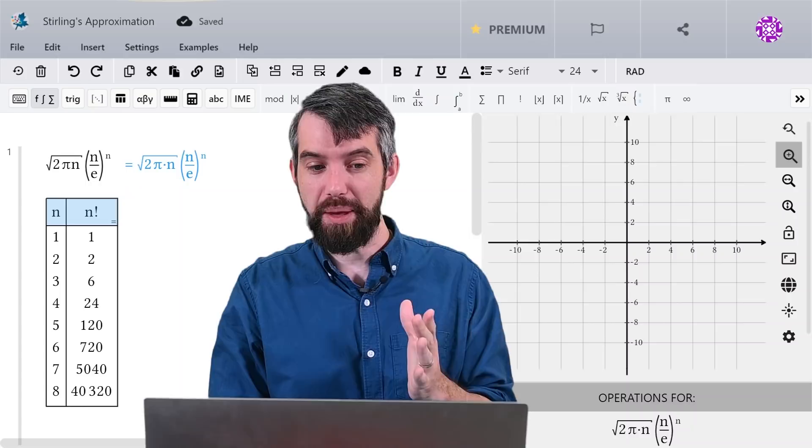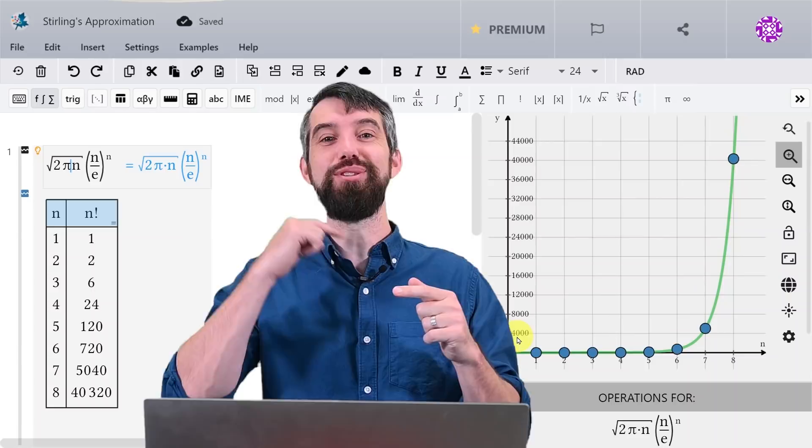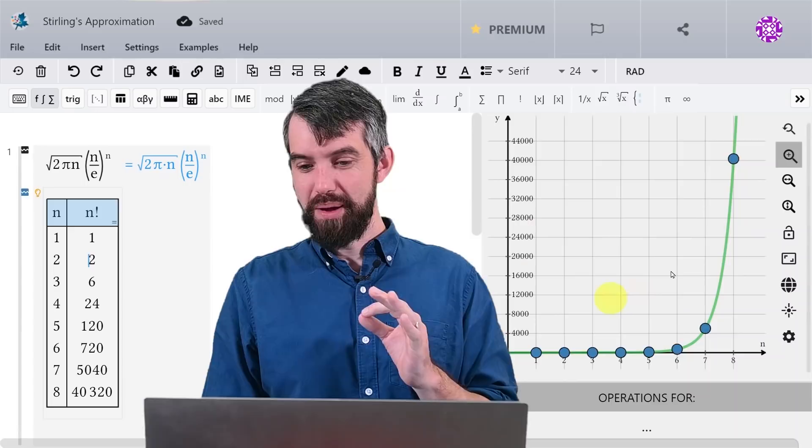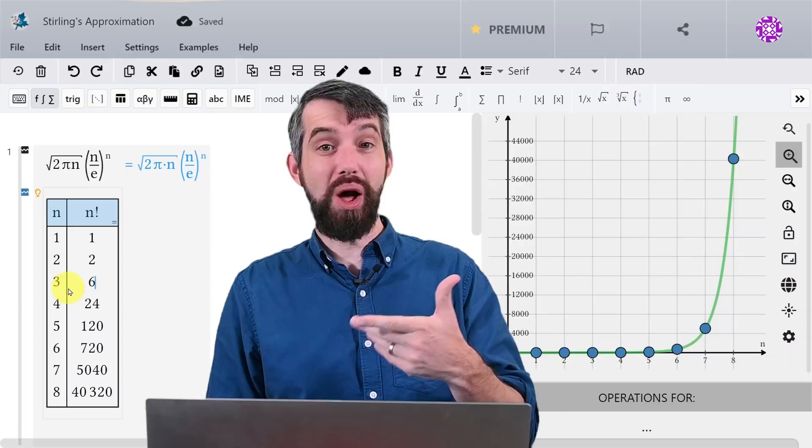So on the left-hand side here, I'm going to plot in green the continuous function that allows any value of n, an integer or not, and you can see in green the expression. But then the blue dots are given here by this table, which plots just n factorial: 1 factorial, 2 factorial, 3 factorial, and so on.